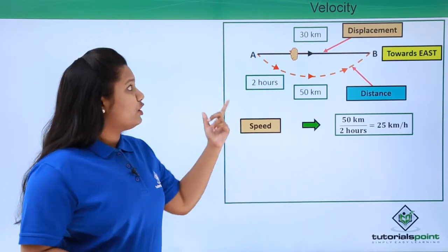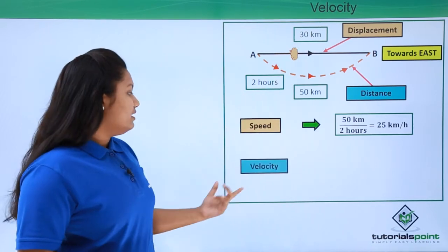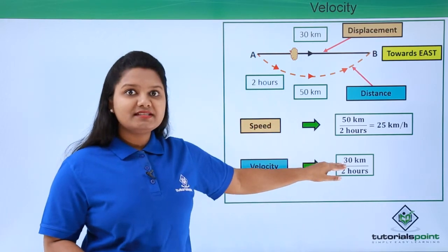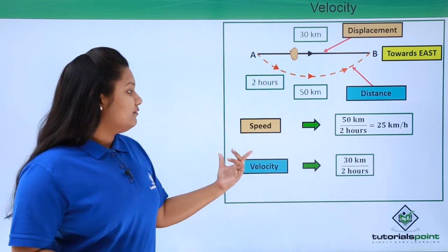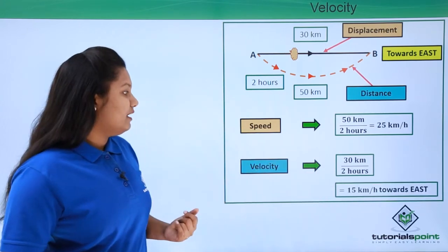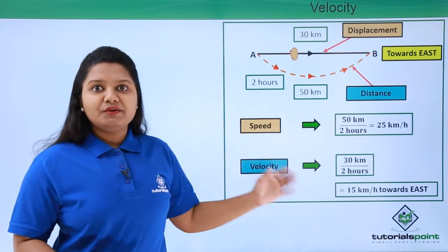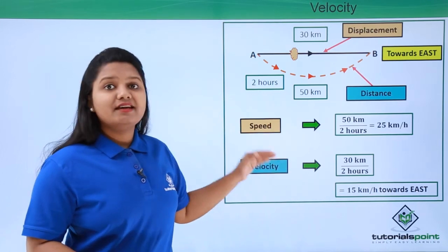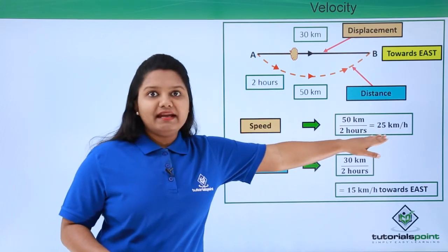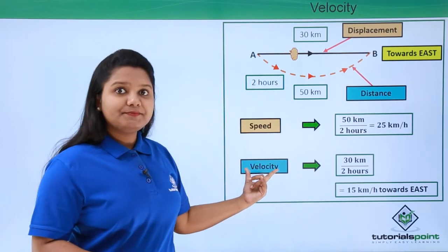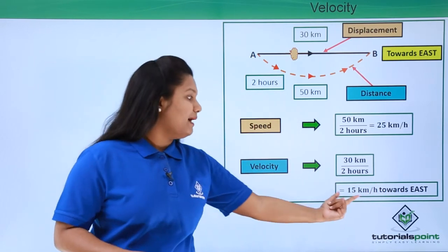When we talk about velocity, we take the displacement of the body into consideration. So the velocity becomes 30 kilometers divided by 2 hours, giving 15 kilometers per hour towards east. Here you can notice the difference: speed only involves magnitude, but when specifying velocity we also include the direction — towards east — along with the magnitude.